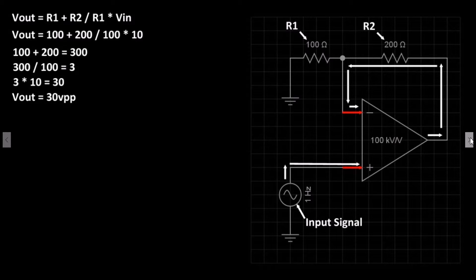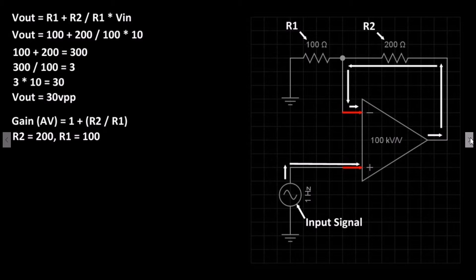The gain of the amplifier is calculated as follows: Gain equals 1 plus R2 divided by R1. R2 equals 200, R1 equals 100. 200 divided by 100 equals 2. 2 plus 1 equals 3.